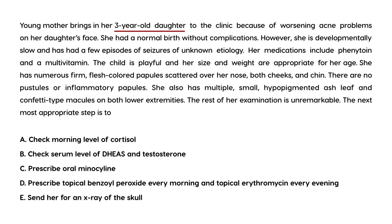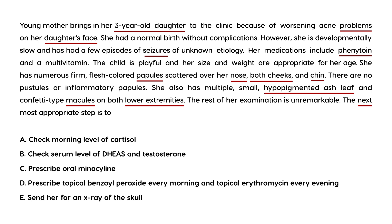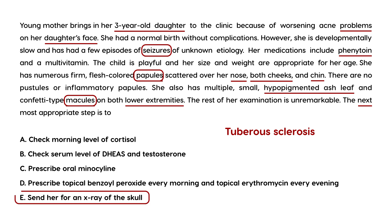Vignette 2: A young mother brings her 3-year-old daughter to the clinic for worsening acne on the face. The child had a normal birth but is developmentally slow and has had a few seizures of unknown etiology. Medications include phenytoin and a multivitamin. She has numerous firm, flesh-colored papules over the nose, both cheeks, and chin — no pustules or inflammatory papules. She also has multiple small hypopigmented ash-leaf and confetti-type macules on both lower extremities. A child with seizures and characteristic skin findings suggests tuberous sclerosis, so the most appropriate next step is imaging — likely an x-ray of the skull given the seizures.